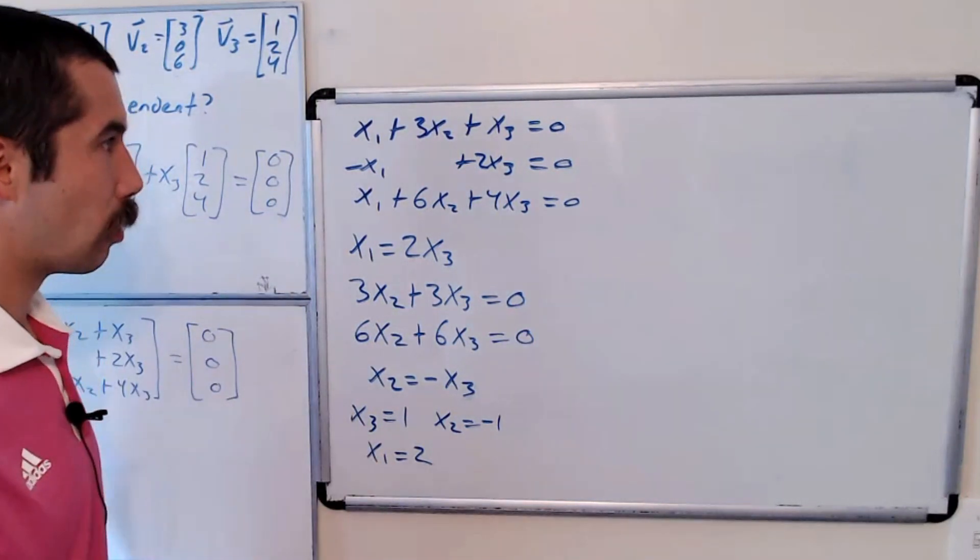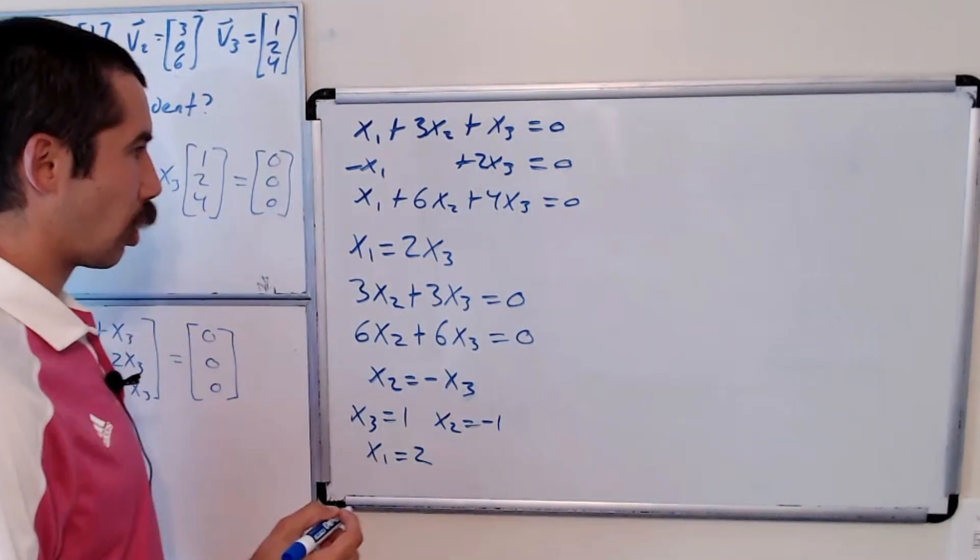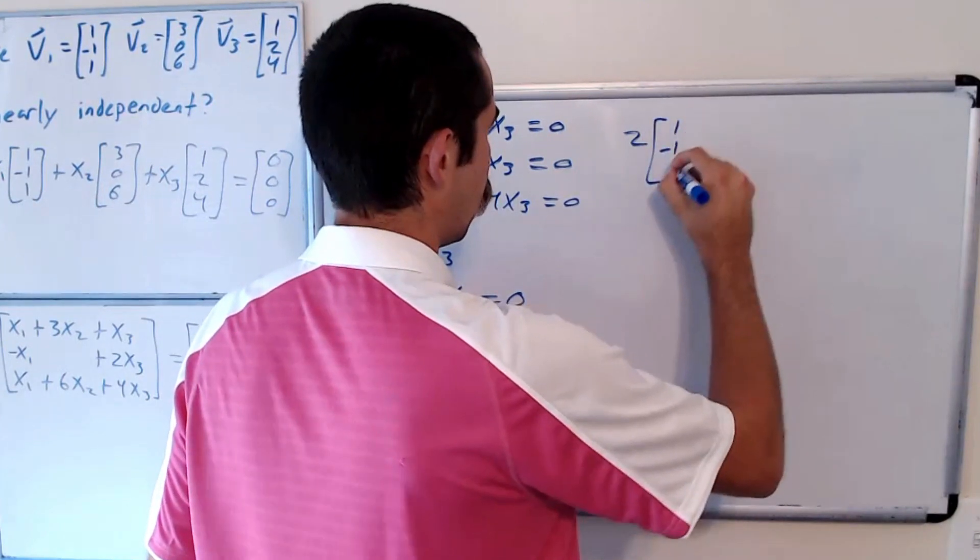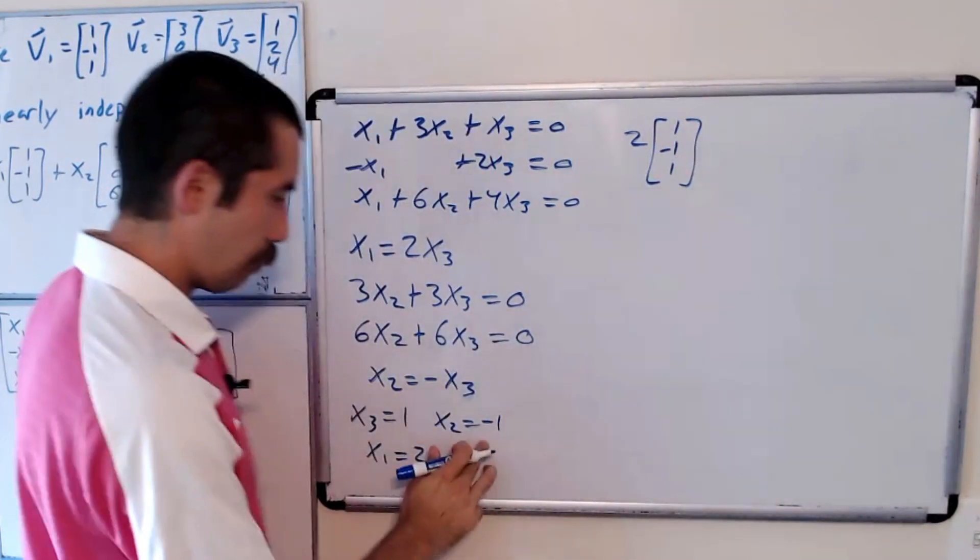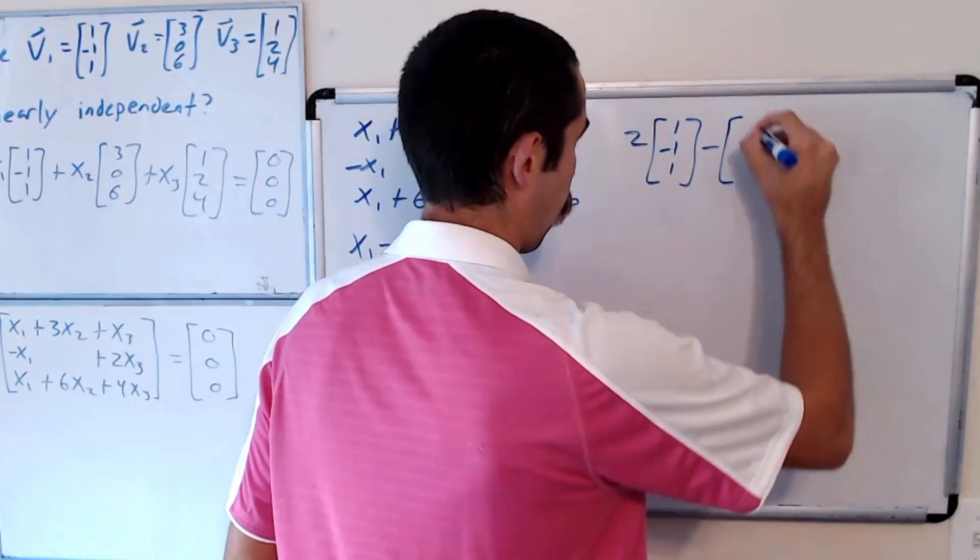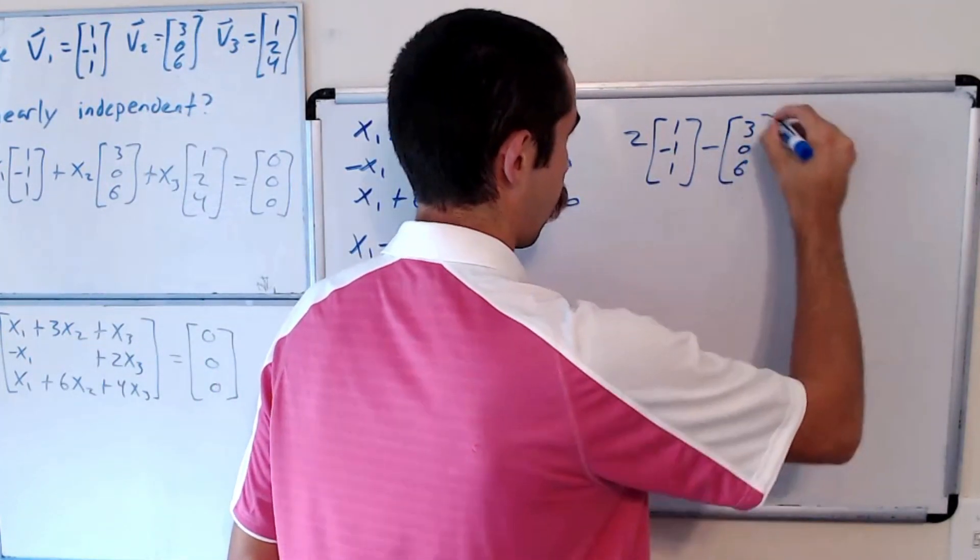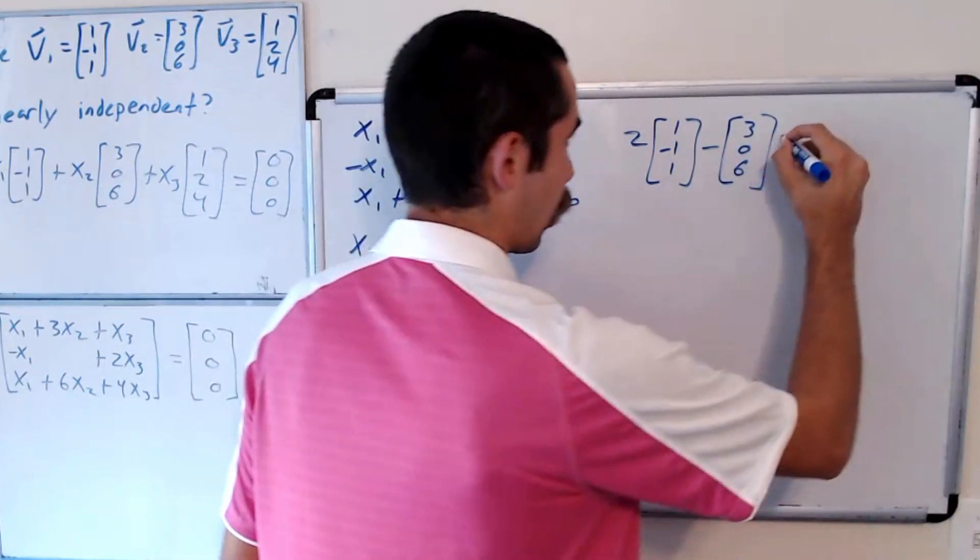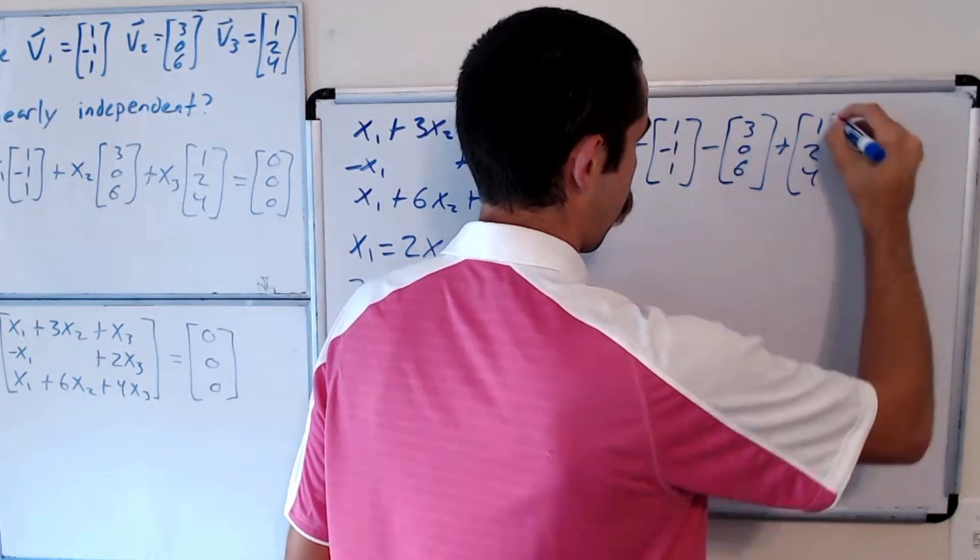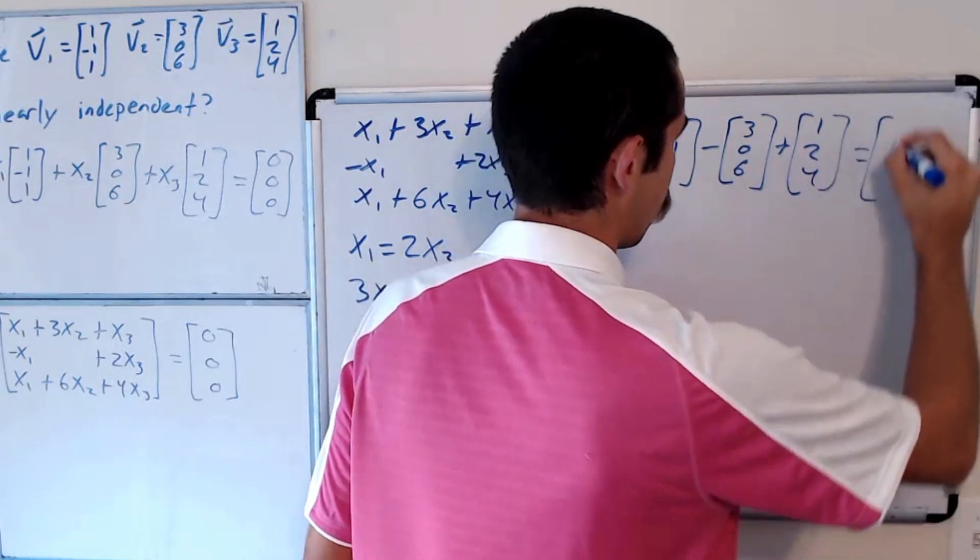Okay, so what did we just show? A non-trivial solution to our original equation would be 2 times the first vector minus the second vector plus the third vector is equal to 0, 0, 0.